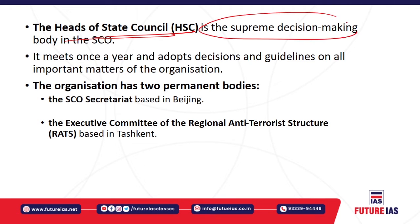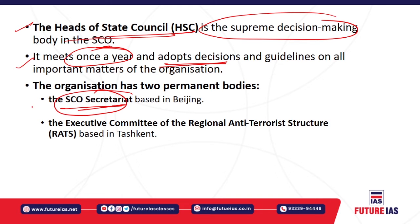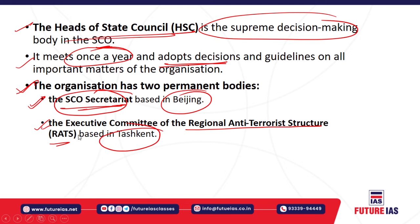The heads of the state council is the supreme decision-making body of the Shanghai Cooperation Organisation, which meets at least once a year. It adopts decisions and guidelines on important matters. The SCO has two permanent bodies: first, the SCO Secretariat, which provides secretarial assistance and is situated in Beijing, China; second, the Executive Committee of the Regional Anti-Terrorist Structure, called RATS, located in Tashkent.